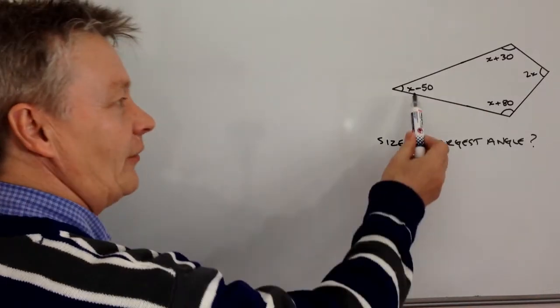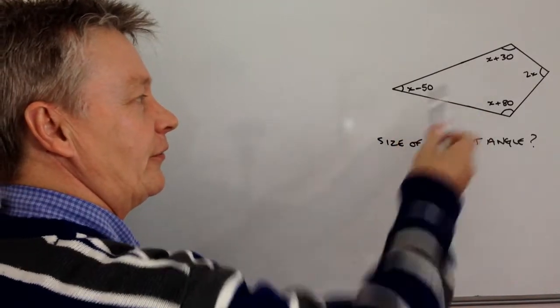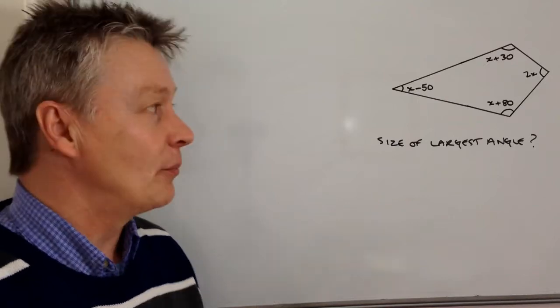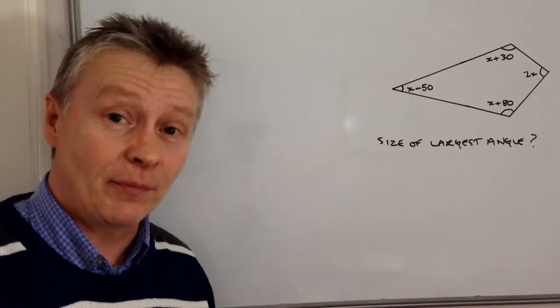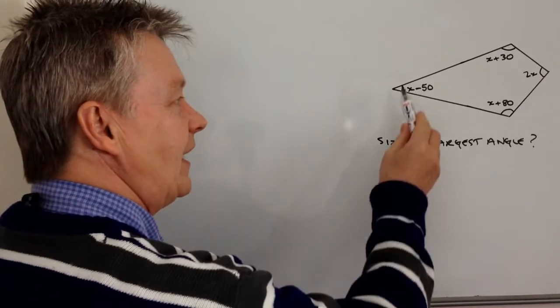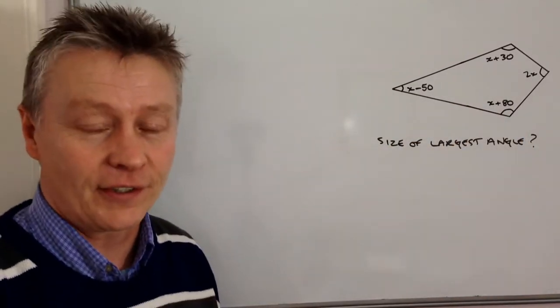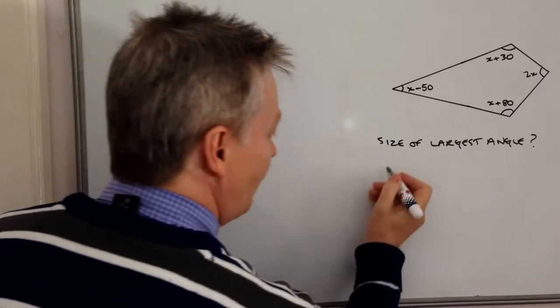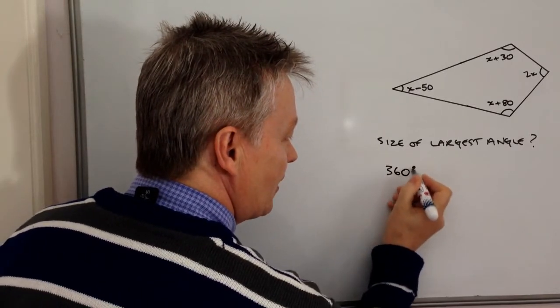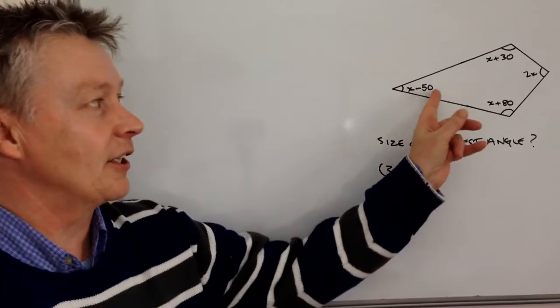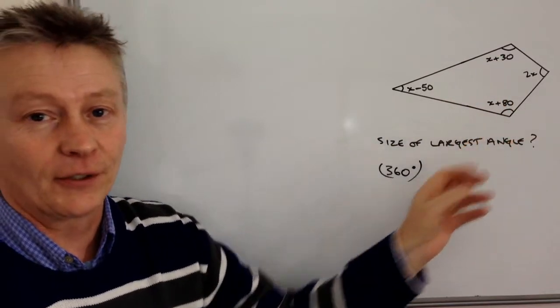The things that we know are that each of the angles we've been given values of X for, but the other thing that we need to know with this type of question is that all the internal angles of a quadrilateral add up to 360 degrees. So that's the important thing, it's 360 degrees when we add up all of these separate angles.